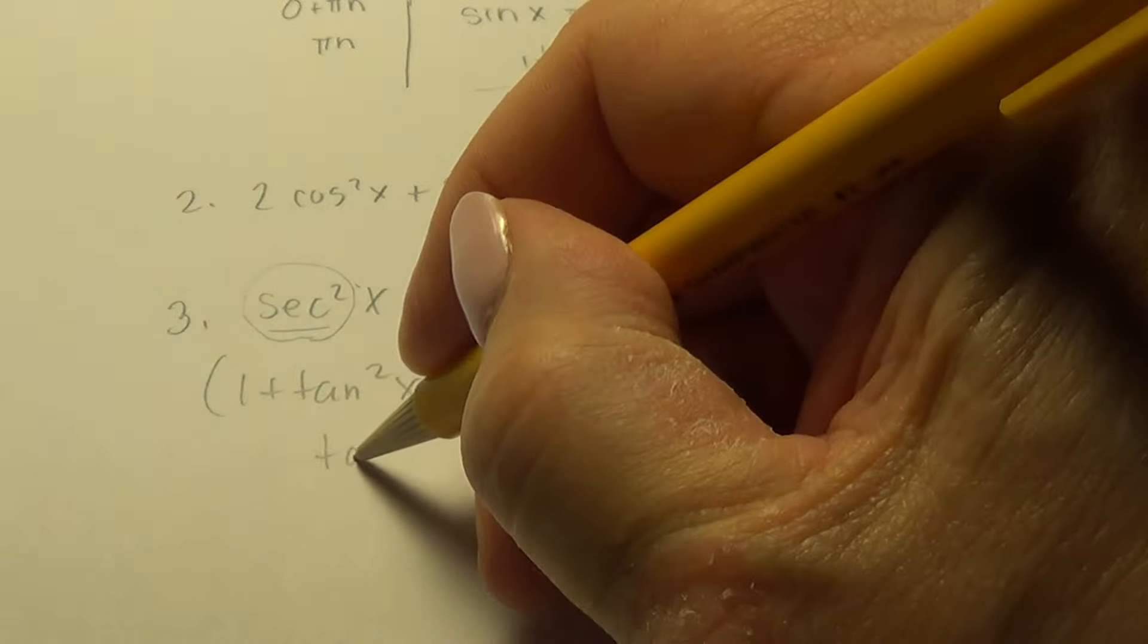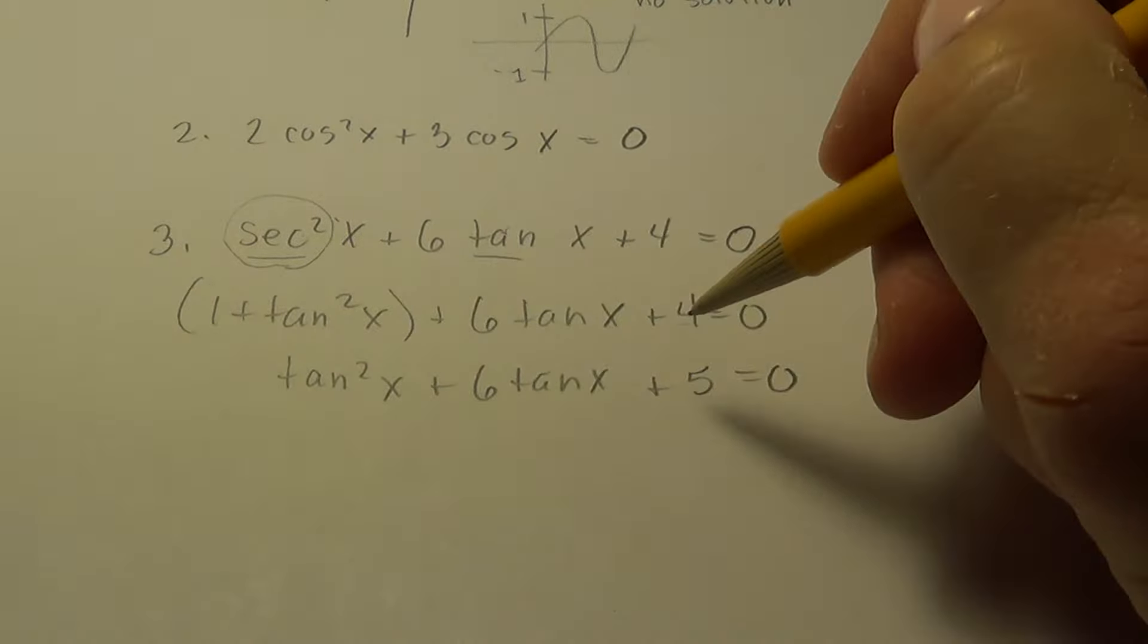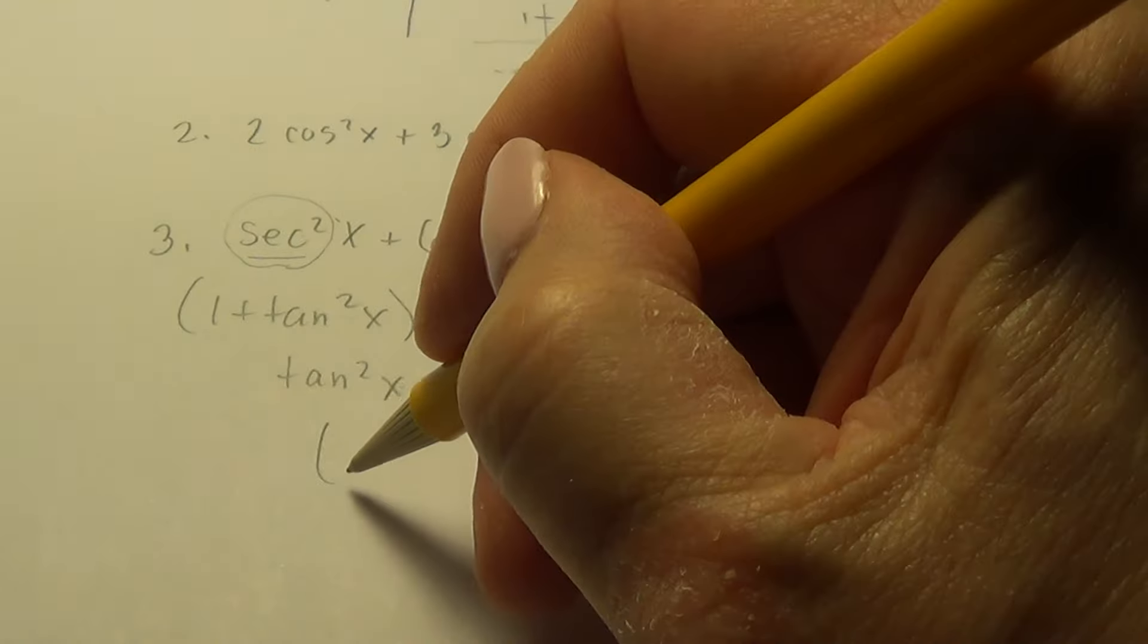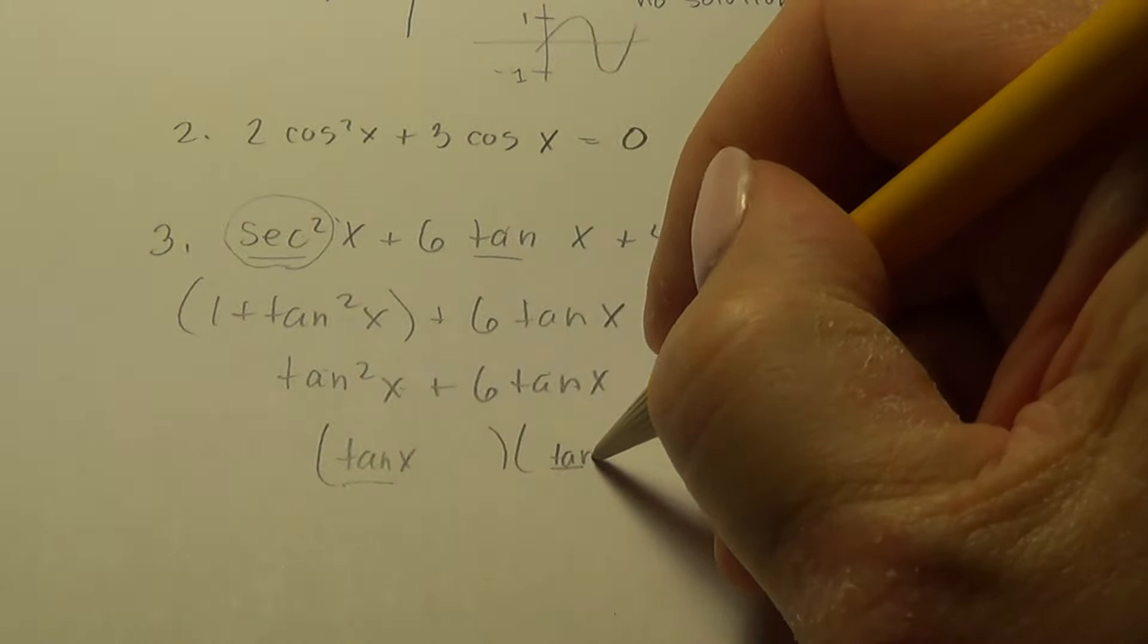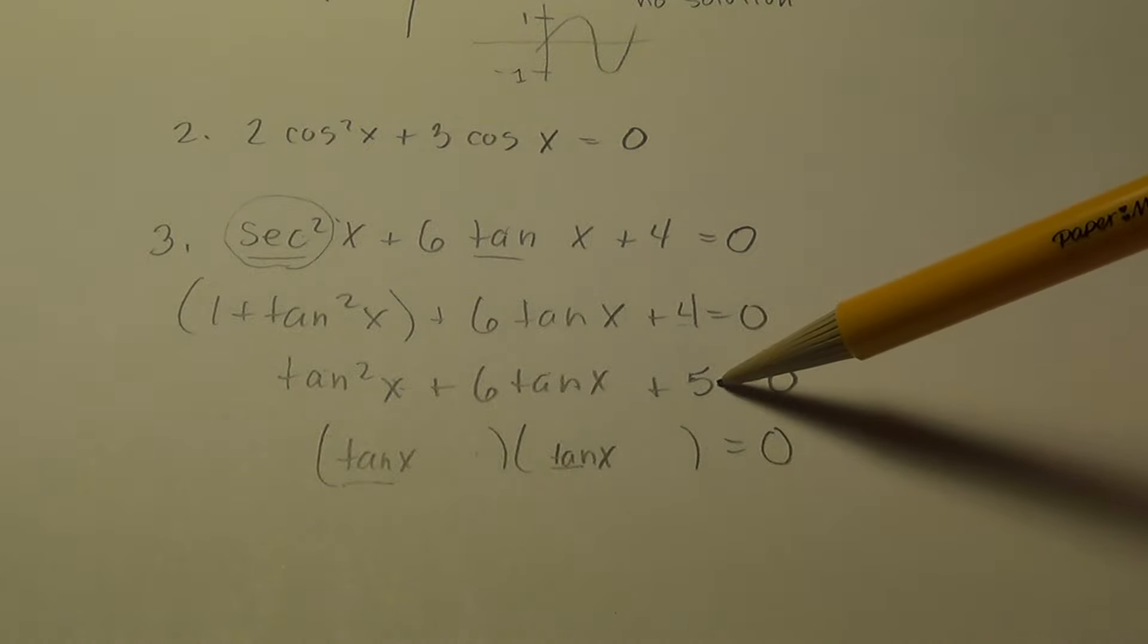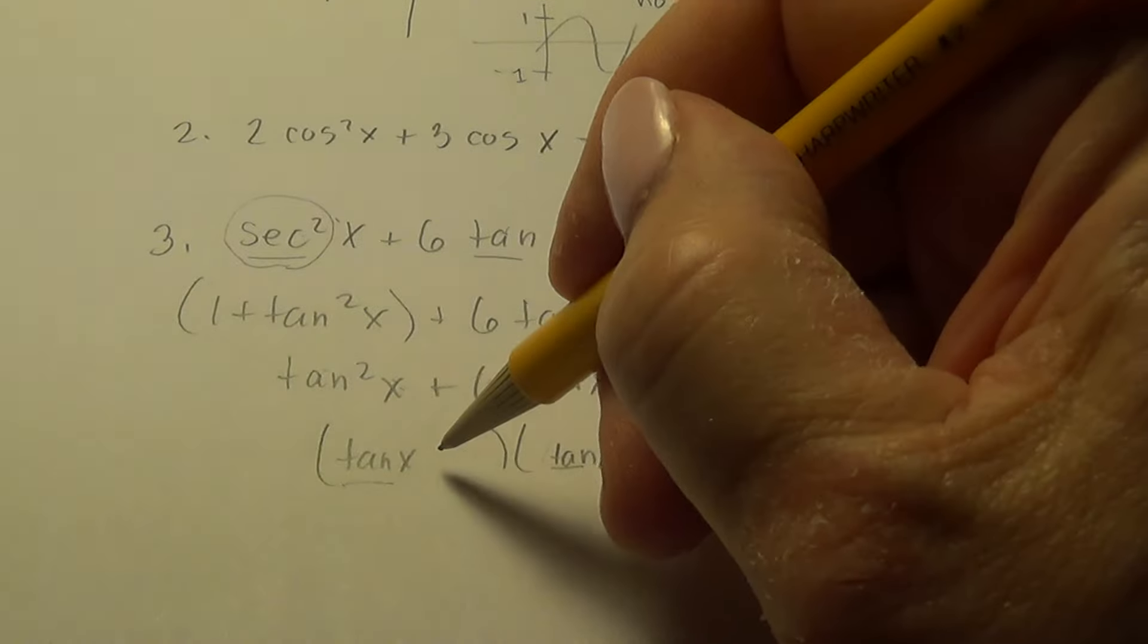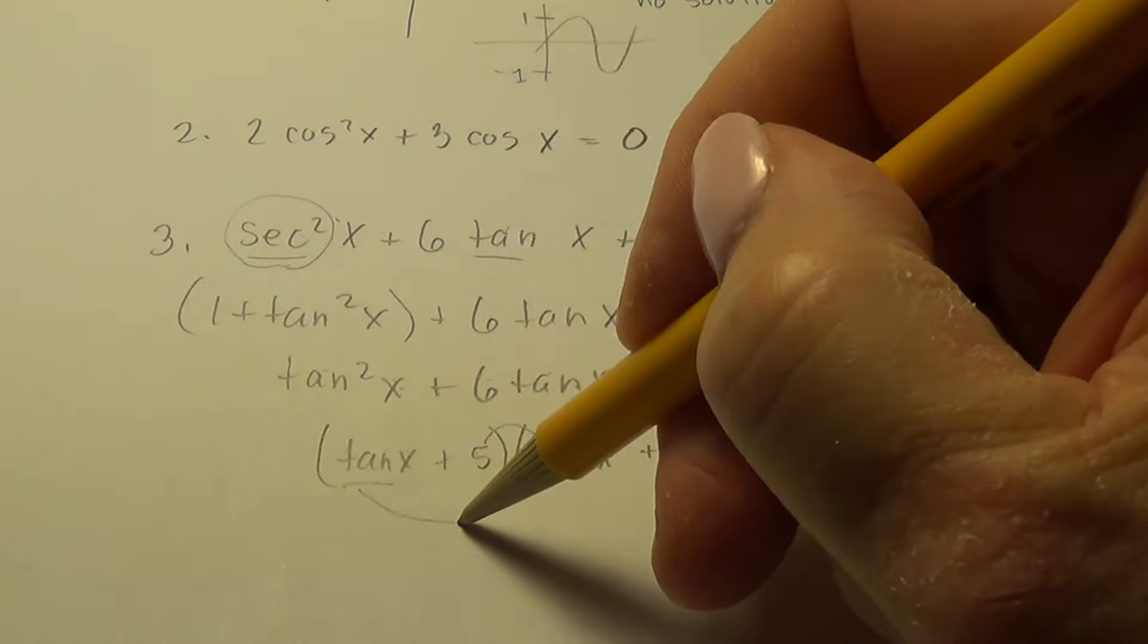And now we are at the point where we have to factor. So this one has three terms. They don't have anything in common. So I'm going to have to factor it like a backwards foil. So what goes in the first position, it has to multiply to give you tan²x. tan x times tan x will give you tan²x. The last position times the last position will give you 5. And at the same time, add to 6. So let's try 5 and 1. Let's check the inner product. It's 5tan x and the outer product is 1tan x. They do add to give us the 6. So we have factored it correctly.